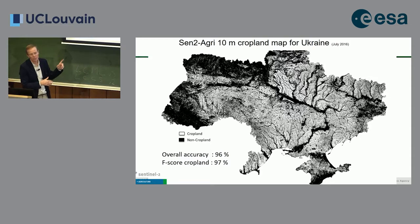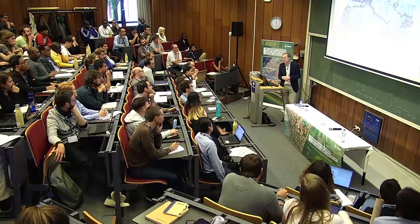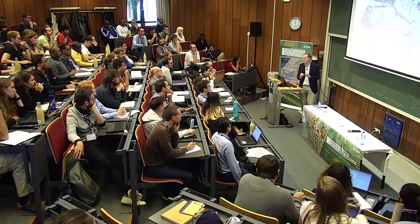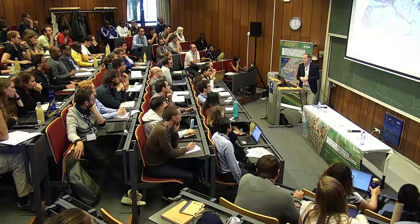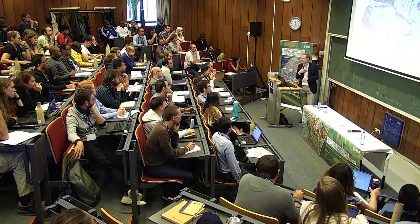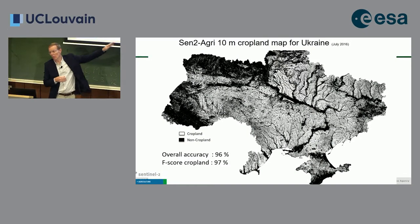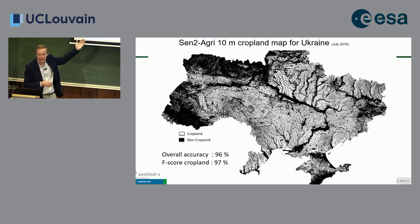We checked and double-checked and it was correct. Can you say why 96% accuracy is normal here? If you had no satellite imagery at all, how much overall accuracy would you have by just guessing? Because cropland is so widely distributed—more than 90% of the landscape—if you say everything is cropland everywhere without any image, you would already achieve very high accuracy.